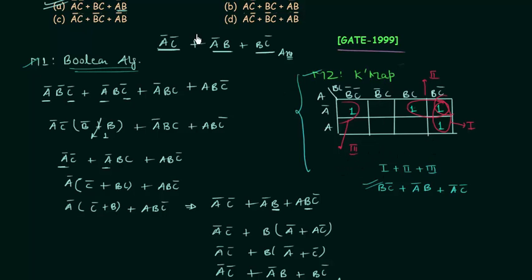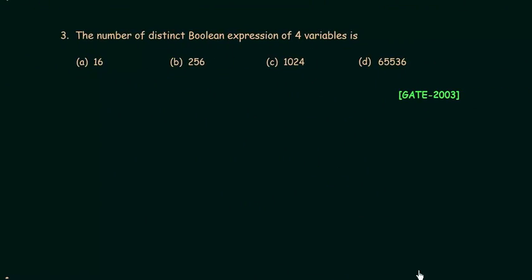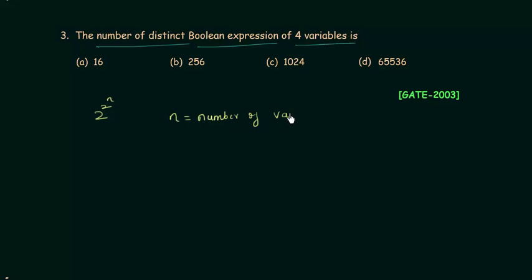Whenever this type of problem appears in an exam, you should solve it using the K-map. Now for the third problem from GATE 2003: we must find the number of distinct Boolean expressions for 4 variables. The formula is 2 raised to the power of 2 raised to the power n, where n is the number of variables. Here n equals 4, so we get 2^(2^4) = 2^16 = 65536.